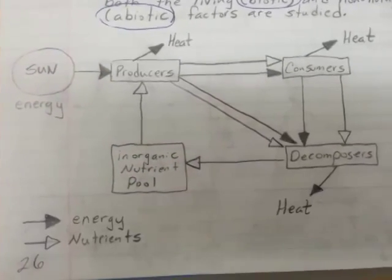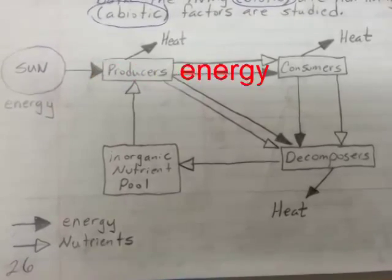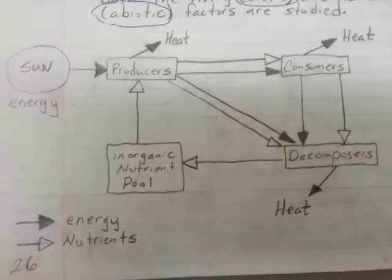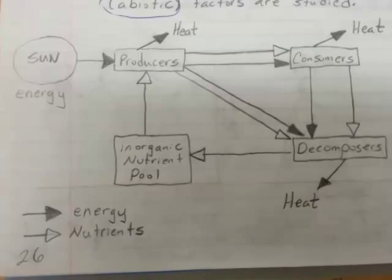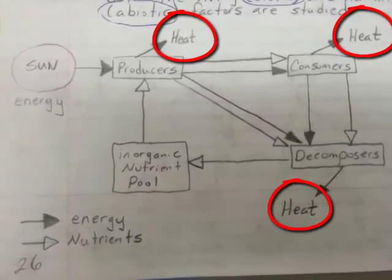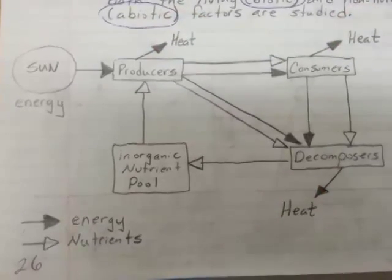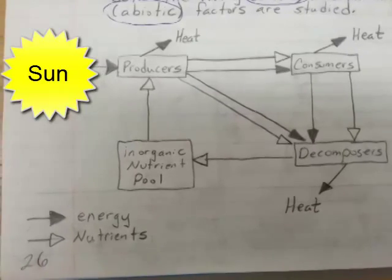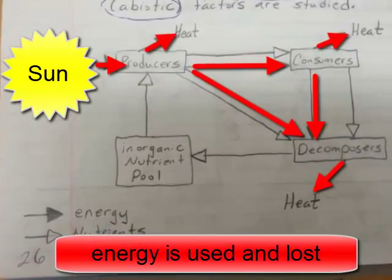The radiant energy comes in, it's captured by producers, and then passes through the trophic levels of ecosystems. Eventually, all the energy that comes in and flows through ecosystems is lost as heat and radiates back out into space. That's why you need a constant input of high quality energy — because the energy flows through ecosystems and is lost.